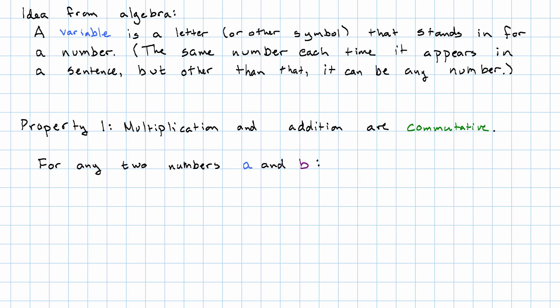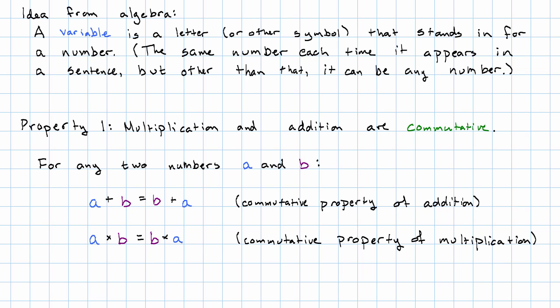If I give you any two numbers, call the first one A, call the second one B, well, if I add the first plus the second, that's the same as adding the second plus the first. That's the commutative property of addition. And if I multiply the first by the second, that's the same as multiplying the second by the first.